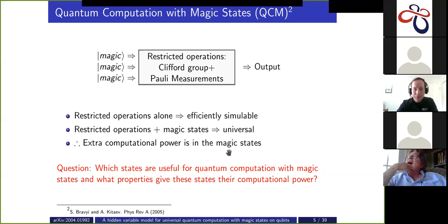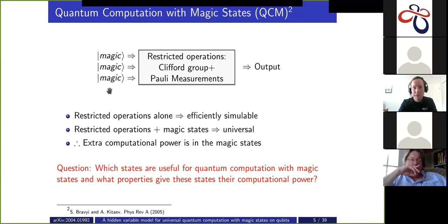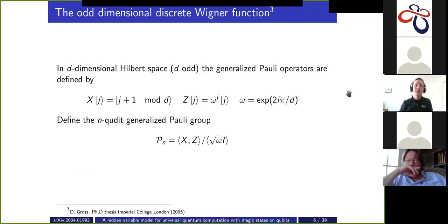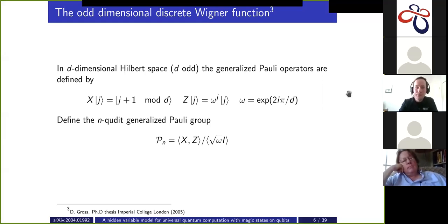A question we can ask is: which quantum states are useful for quantum computation with magic states? Which states can you put as input to restore universality? We know that not just any state will work — a stabilizer state wouldn't work. So we want to characterize which states are useful. One way of thinking about it is through the discrete Wigner functions, which we'll spend the next few slides setting up.